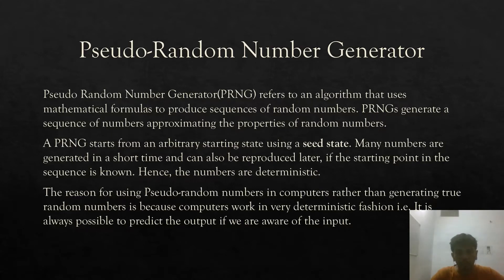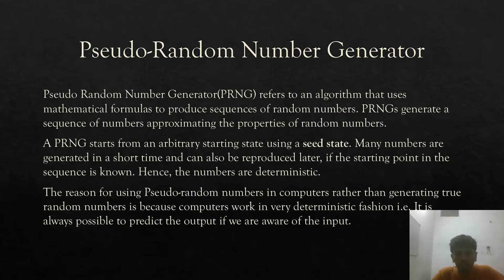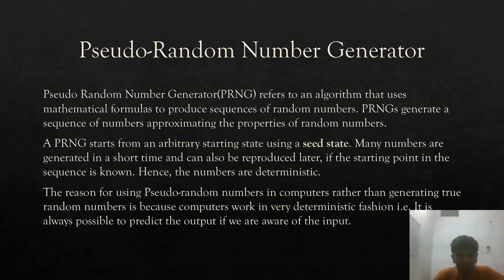A pseudo-random number generator refers to an algorithm that uses some mathematical formulation to generate a sequence of random numbers. Random numbers are such that using the current number we cannot predict what the next number will be. The reason for using pseudo-random numbers rather than true random numbers in computers is because computers are very deterministic systems — using the current state you can easily predict what the next output is. Hence we need to use mathematical formulations for generating numbers which seem to be random but are not truly random.